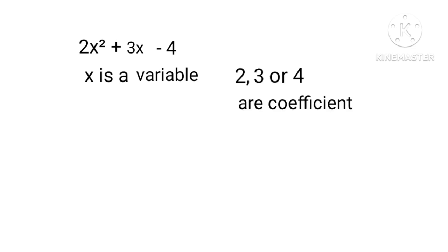Let us consider a polynomial 2X² plus 3X minus 4. Here X is a variable, and 2, 3, and 4 are coefficients.